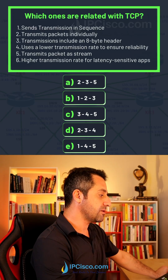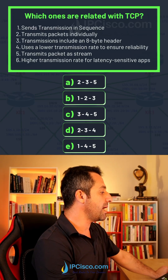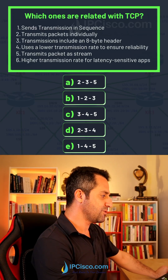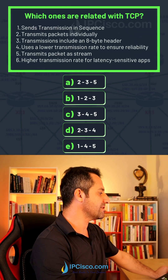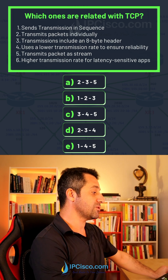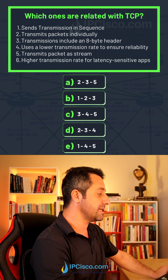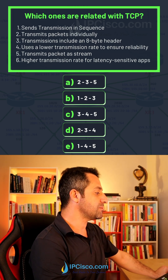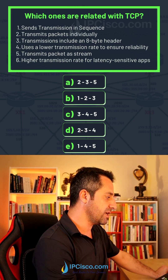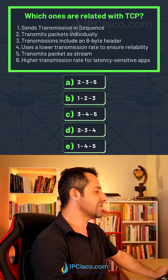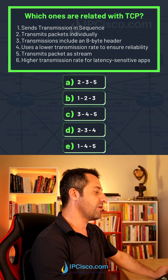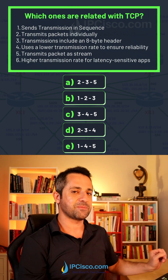Transmission include an 8-byte header, uses a lower transmission rate to ensure reliability, transmits packet as stream, higher transmission rate for latency sensitive applications.